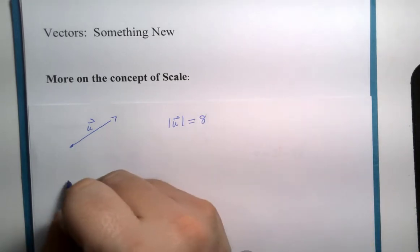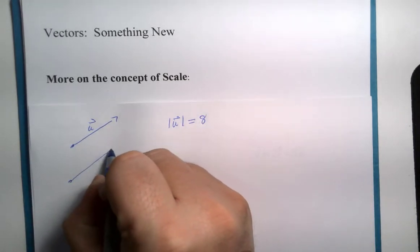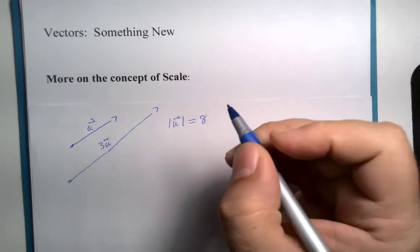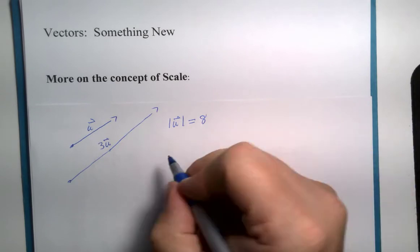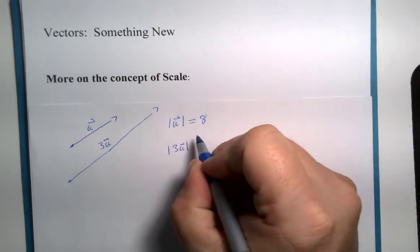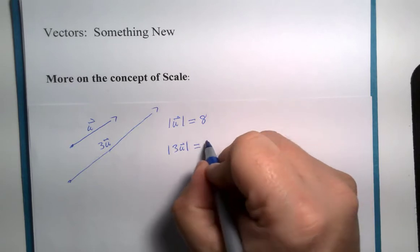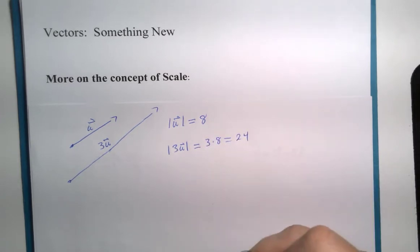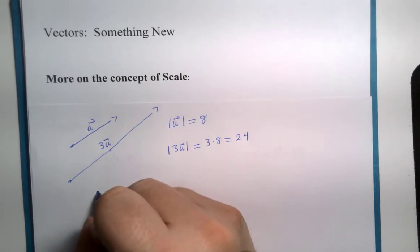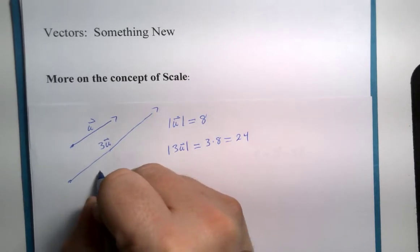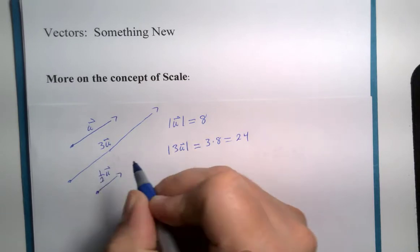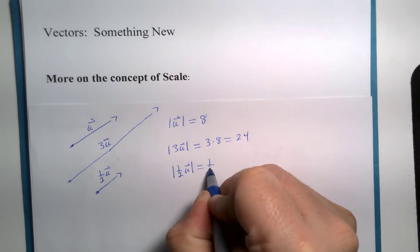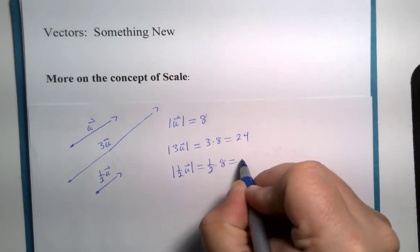then if I were to use what's called a scalar multiplication and multiply that vector by 3, then the magnitude is 3 times 8, which is 24. Or if I were to multiply by 1 half, then the magnitude of 1 half u would be half of 8, which would be 4.